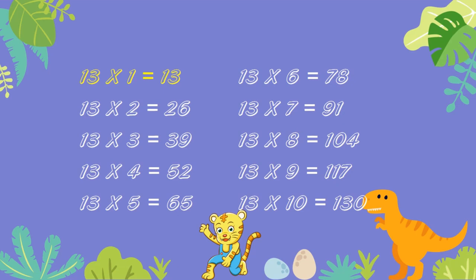13 ones are 13. 13 twos are 26. 13 threes are 39. 13 fours are 52. 13 fives are 65. 13 sixes are 78. 13 sevens are 91. 13 eights are 104. 13 nines are 117. 13 tens are 130.